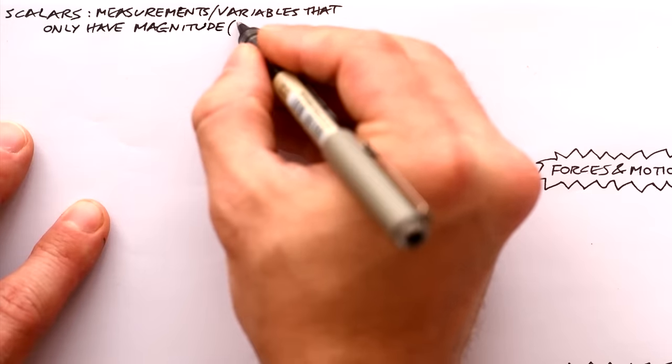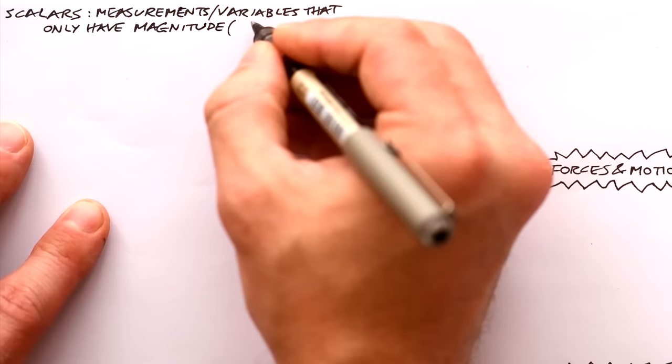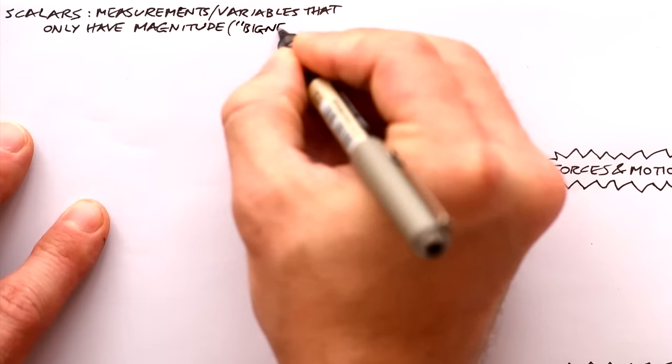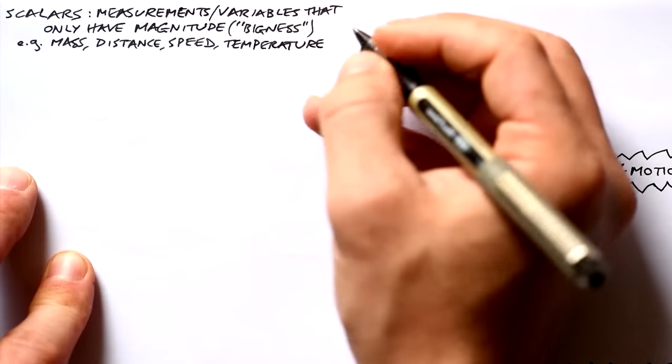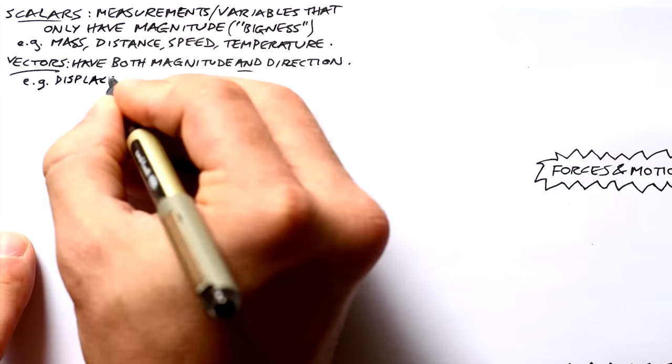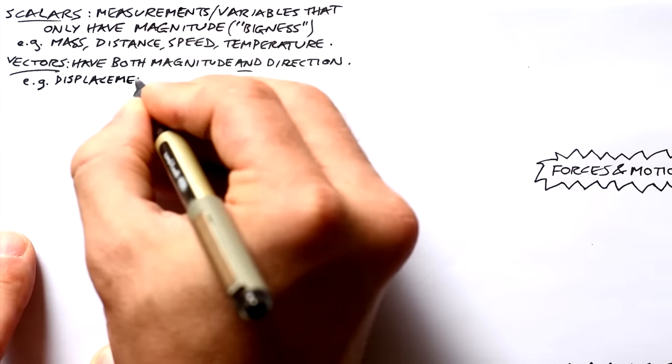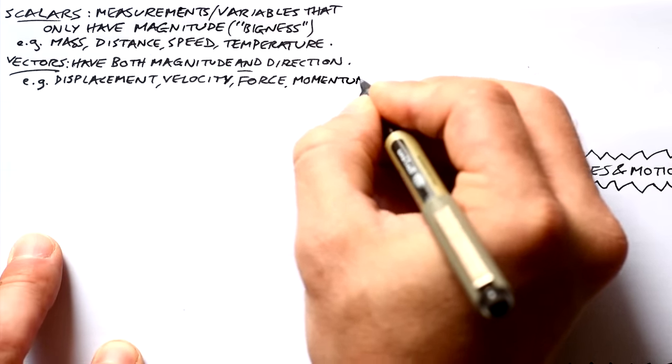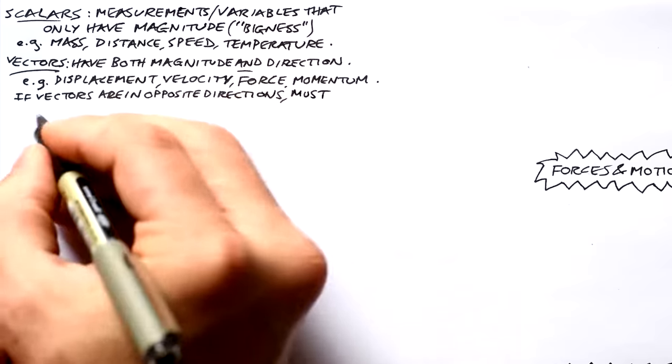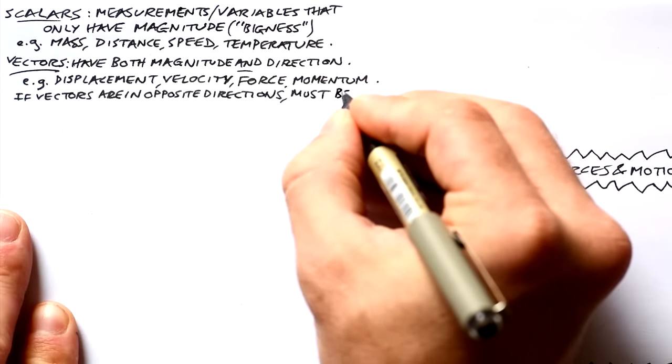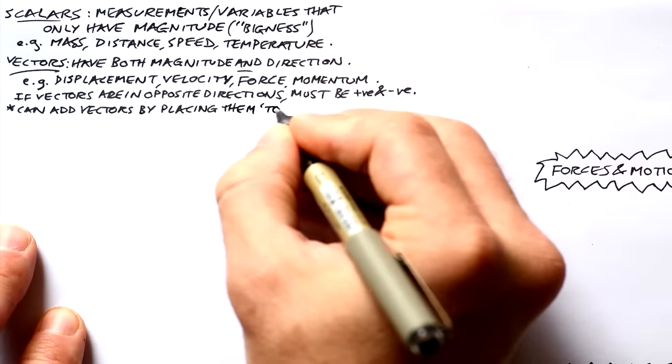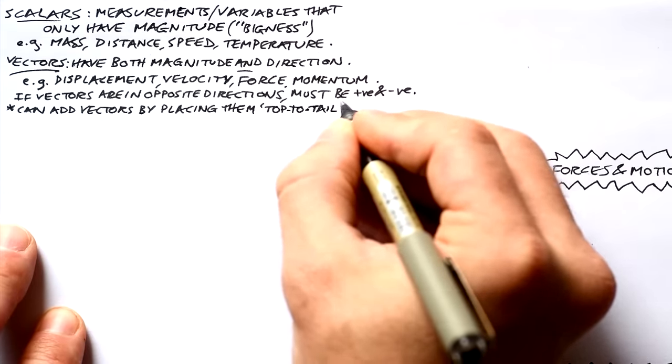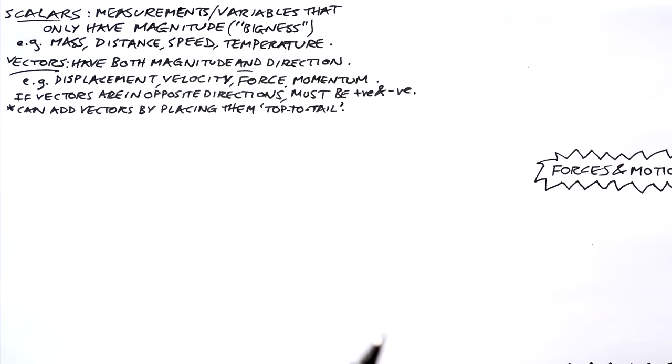First things first, there are two different types of measurements or variables. There are scalars and vectors. Scalars are variables that only have magnitude or bigness, just a number like mass, distance, speed and temperature. Vectors on the other hand have magnitude and direction like displacement, velocity, force and momentum. Quite often we deal with vectors that are in opposite directions. In that case one must be positive and the other negative.